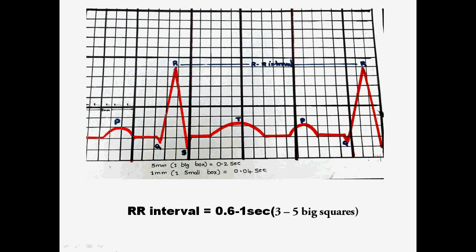As the RR interval needs the electrical activity of two cardiac cycles, RR interval is the time between two R waves. The normal duration varies from 0.6 to 1 second, that is it varies from 3 to 5 full big squares. An interesting fact of the RR interval is that we can calculate the heart beat by counting the number of small squares between two R waves.